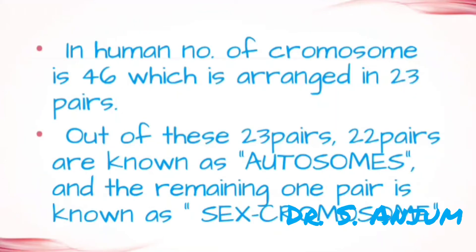In humans, the number of chromosomes is 46, which are arranged in 23 pairs. Out of these 23 pairs, 22 pairs are known as autosomes, and the remaining pair is known as sex chromosomes.